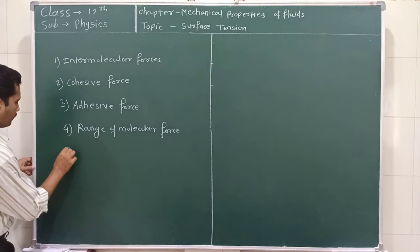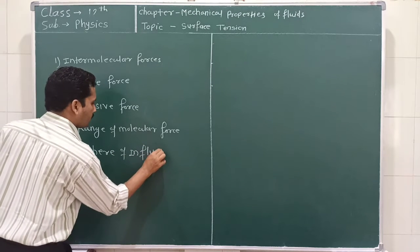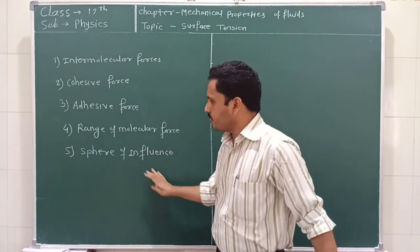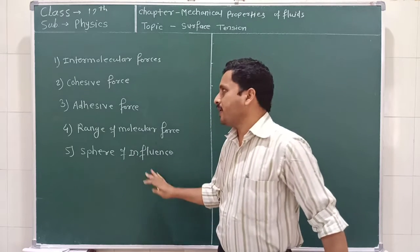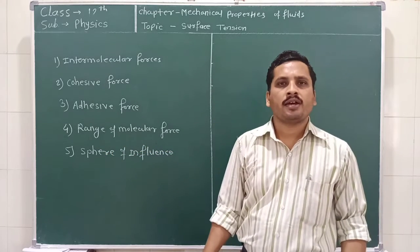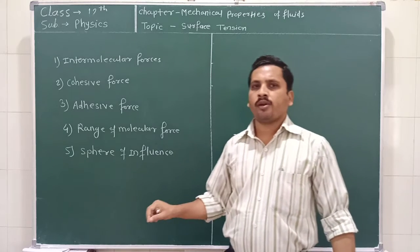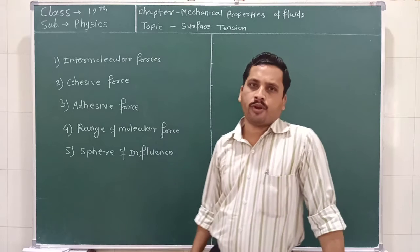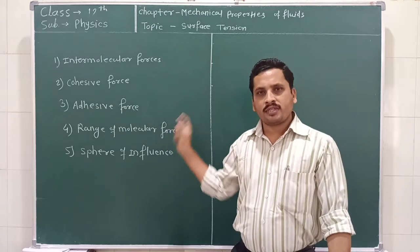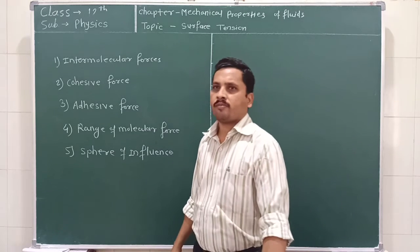The next term is called the sphere of influence. The sphere of influence is an imaginary sphere drawn by taking a molecule as the center and the range of molecular forces as the radius. Any molecule within this sphere of influence is attracted by that central molecule. Such an imaginary sphere is called the sphere of influence.